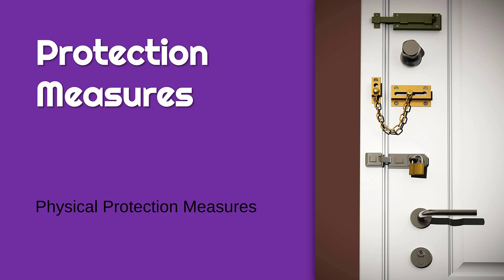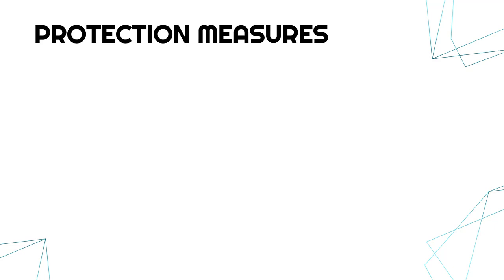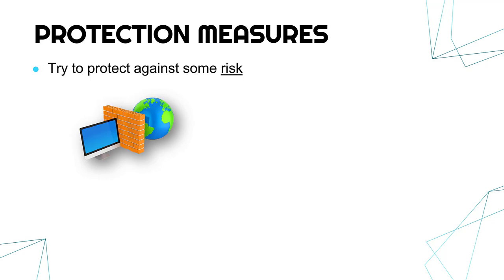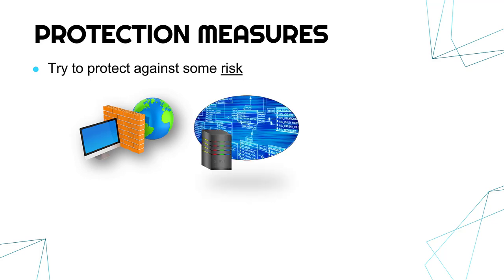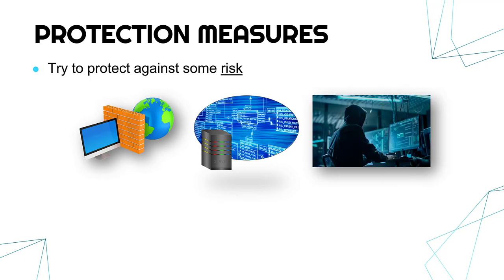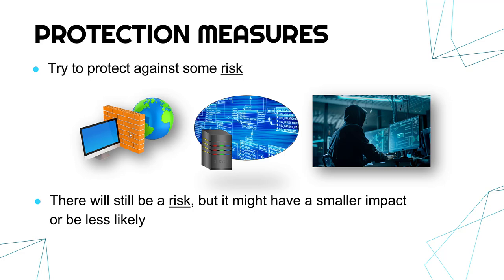I'm going to talk about physical protection measures in this video. A protection measure in the context of information security is trying to protect against some risk — to defend your organization from a risk you feel could happen. For instance, you might have a firewall protecting secure data from an attacker. The firewall is your protection measure, the data is what you're protecting, and the hacker is the risk. The hacker doesn't go away because you have a firewall, but the risk is lessened. There will still be a risk — you can never completely eliminate risks — but ideally your protection measures will mean a smaller impact if it does happen, or make it less likely.